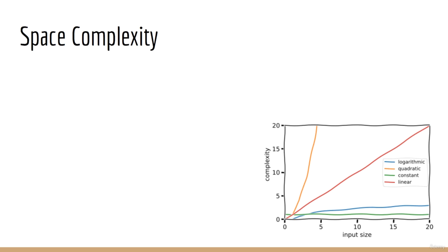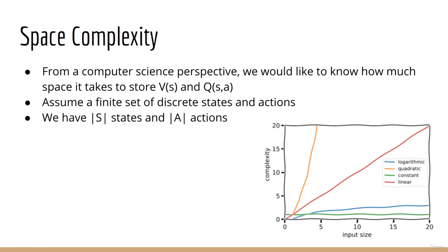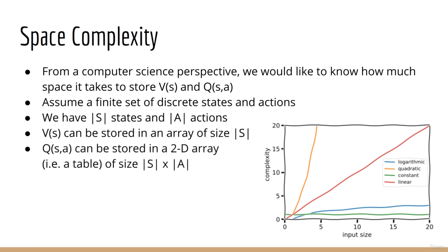One interesting question to consider from a computer science perspective is how much space is required to store the value functions. Let's consider the scenario where both states and actions are discrete and that we have a finite number of them. So, let's say we have big S states and big A actions. In this case, we can store the state value function in an array of size big S. But for the action value function, we'll have to store it in a two-dimensional array of size big S times big A. And thus, the storage required for q is quadratic, whereas the storage required for v is only linear.